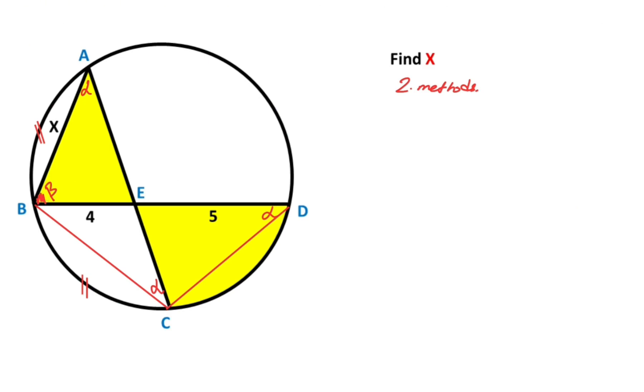After that, let's call here beta. If you notice that angle ACD must be equal beta, right? Why? Because notice that they have the same arc.